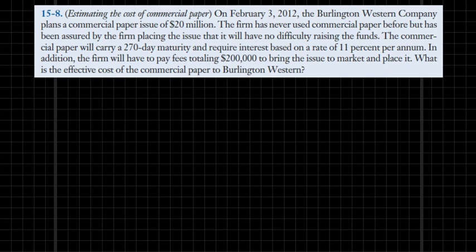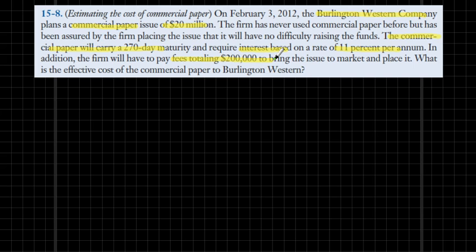Let's go ahead and highlight key facts provided in the problem. Burlington Western Company is planning to issue commercial paper in the amount of 20 million dollars — that's another way of borrowing money. The commercial paper will carry a 270-day maturity, so we can consider it as 9 months, and it will have an annual interest rate of 11%. In addition, the firm will have to pay fees to the investment bank in the amount of 200,000 dollars to bring the commercial paper issue to the market and place it.